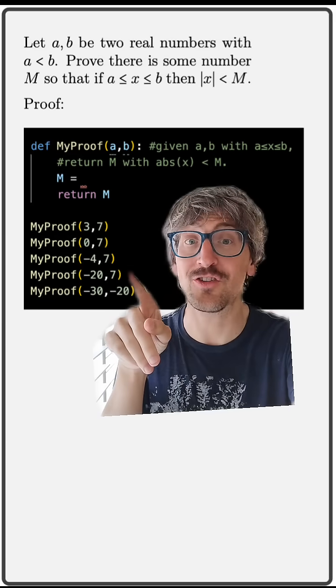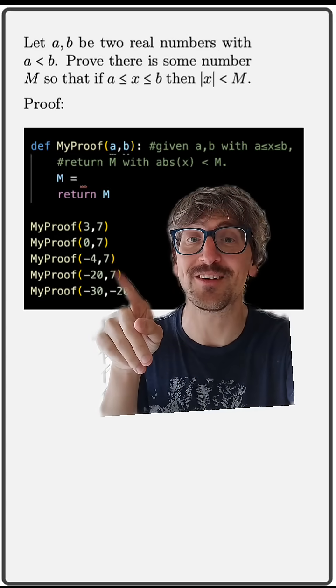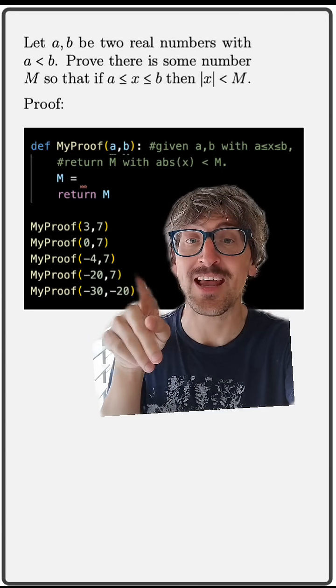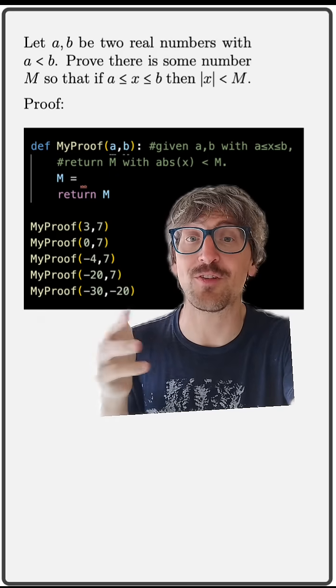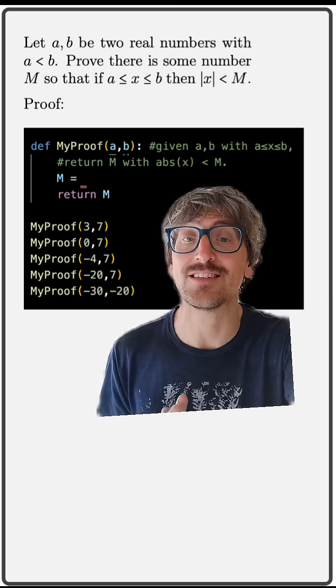But what if you've got negative numbers? Well actually it still works here with negative four and seven. If we take the right endpoint and add one, any number in that interval if we take the absolute value will still be strictly less than eight.